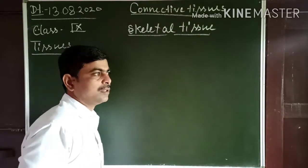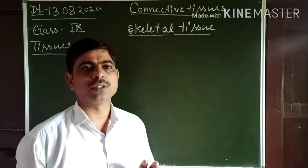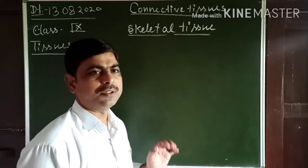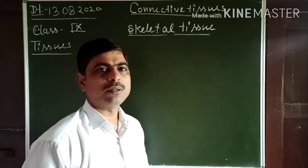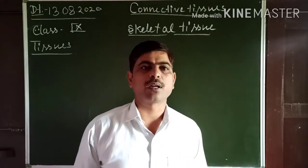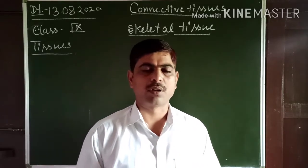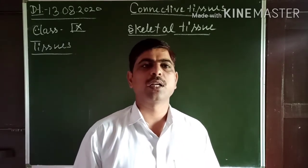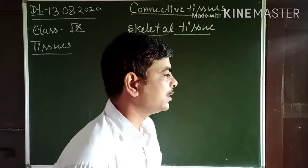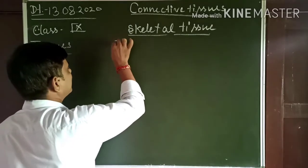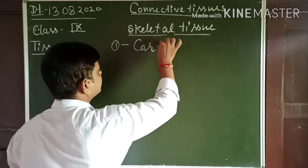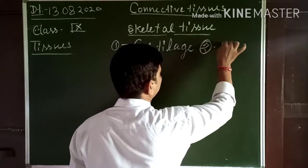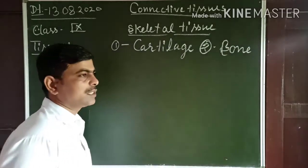Dear students, previously you studied about the epithelial tissue and different types of muscular tissue and some types of connective tissue. Remaining parts will be discussed today. Skeletal tissue, as the name itself suggests, provides the framework of the body and helps in locomotion of body organs. They also help in protection of vital and delicate organs lying inside the body. Skeletal tissue is of two types: cartilage and bone.